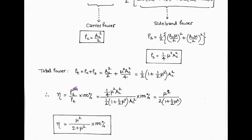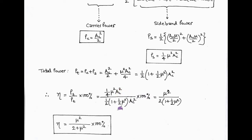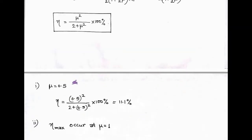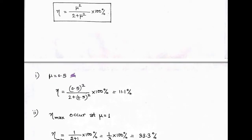Now we can determine efficiency. Efficiency is the ratio of sideband power to total power, multiplied by 100%. After substituting sideband power (1/4) mu² ac² and total power (ac²/2)(1 + mu²/2), the ac squared cancels. We get percentage efficiency equals mu squared upon (2 plus mu squared) into 100%. In the first part, the modulation index is 0.5, that is 50% modulation. After putting mu equals 0.5, we get efficiency equals 11.1%.